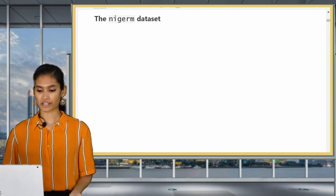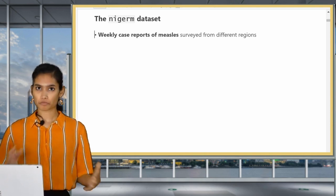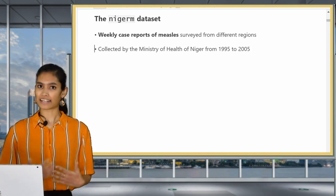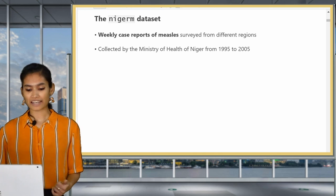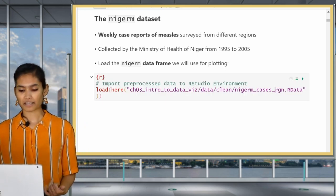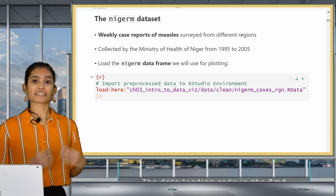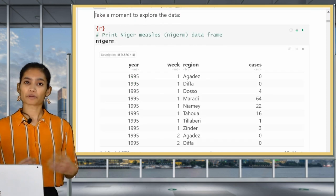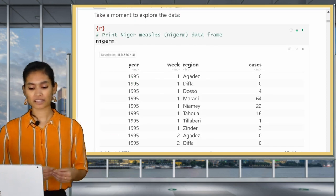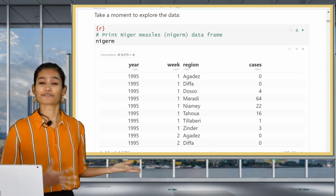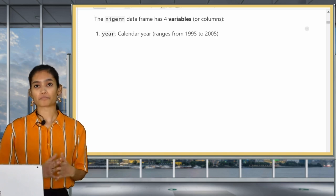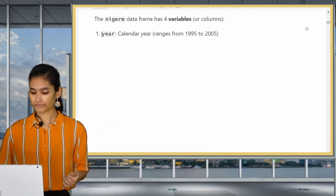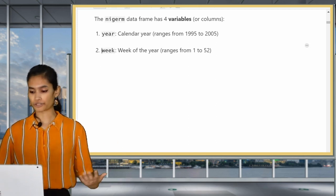So now let's look at the data set that we'll be using for visualizations in this lesson. It is a data set of weekly reported cases from the different regions in Niger, collected by the Ministry of Health of Niger from January 1st 1995 to December 31st 2005 spanning 11 years. To get started we'll load in this data frame into our environment. If you run this code you should see a data frame called Niger M appear in your environment.